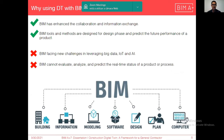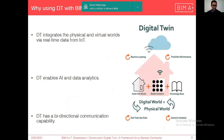BIM, since its emergence, has enhanced collaboration and information exchange between stakeholders in different stages of the project, but it has some limitations regarding leveraging big data, IoT, and artificial intelligence. It also cannot evaluate, analyze, and predict the real-time status of a product or process. Digital twins, on the other hand, are able to integrate the physical and virtual worlds via real-time data from IoT and other devices. They also enable artificial intelligence and data analytics, and their bi-directional communication capability enables data and information flow from the physical entity to the virtual and vice versa.